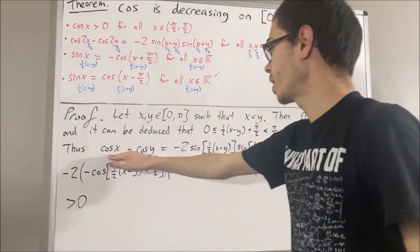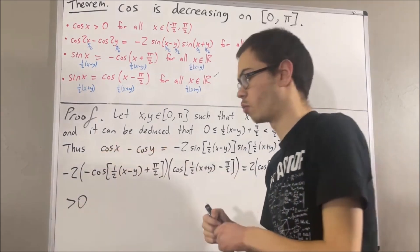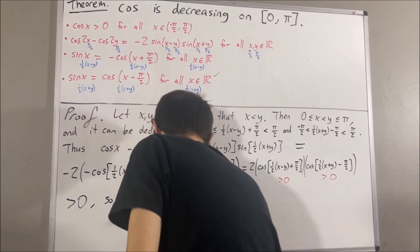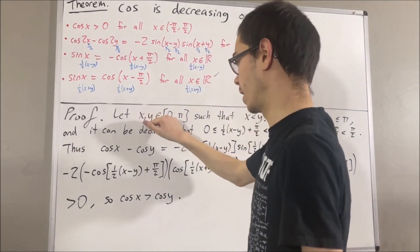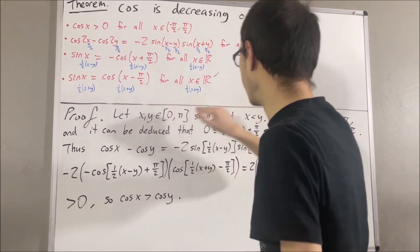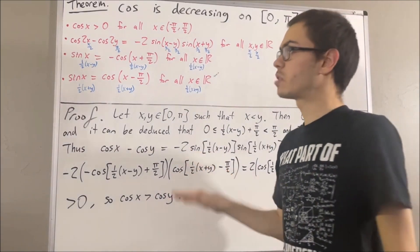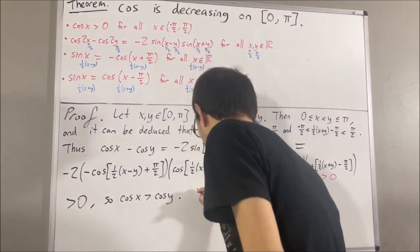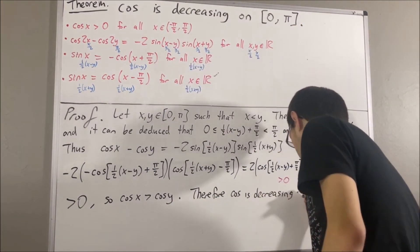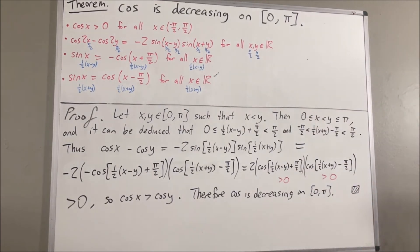So we have shown that cosine x minus cosine y is greater than 0, which implies cosine x is greater than cosine y. Putting this all together, we have shown that given any two real numbers x and y in the closed interval 0 to pi, if x is less than y, then cosine x is greater than cosine y. That is precisely what it means for cosine to be decreasing on the closed interval 0 to pi. This completes the proof. Yeah, that's pretty much it for this video. Thank you.